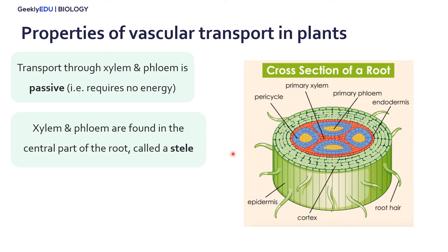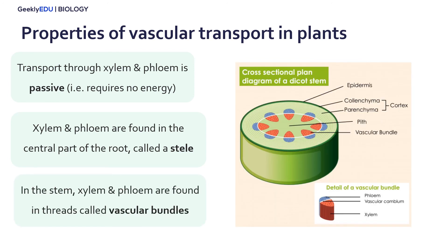Xylem and phloem within the root are spaced in the center in an area called the stele — shown as the red, blue, and yellow area in this cross-section of a root. In the stem, xylem and phloem are found in threads called vascular bundles, shown as the red and blue area in the stem cross-section. Zooming in, we have xylem on the inside and phloem on the outer edge.